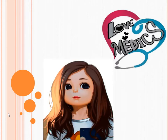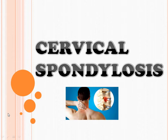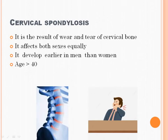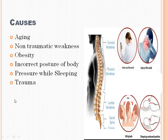Welcome to Love Medics. In this video I am going to explain about cervical spondylosis. Cervical spondylosis means a degenerative condition of cervical bone. It occurs in the cervical vertebrae or intervertebral disc. It is due to age-related changes — the result of wear and tear, meaning the bone works long time and causes damage to the cervical bone. This is the most common cause. It can occur in both male and female, but in males it develops earlier, mostly affecting people above 48 years.